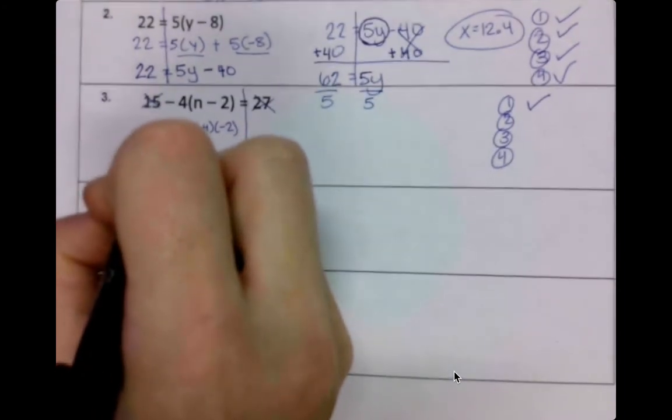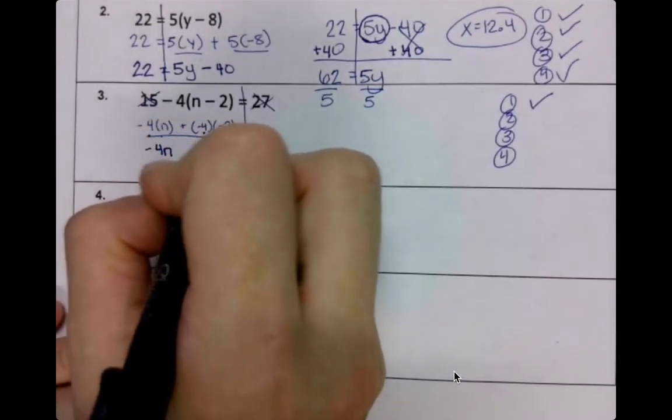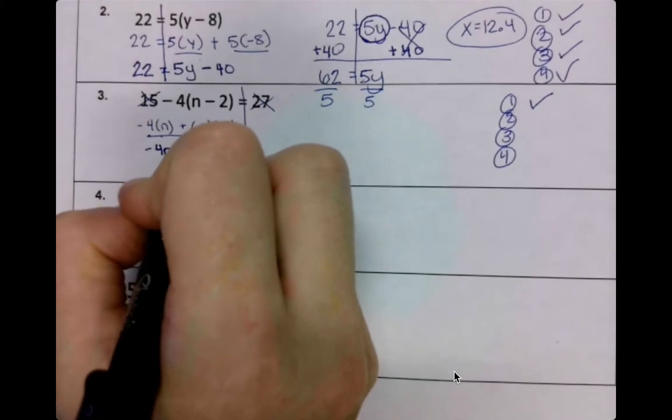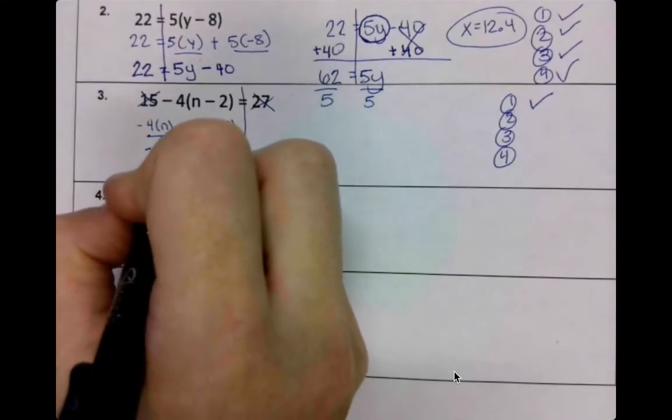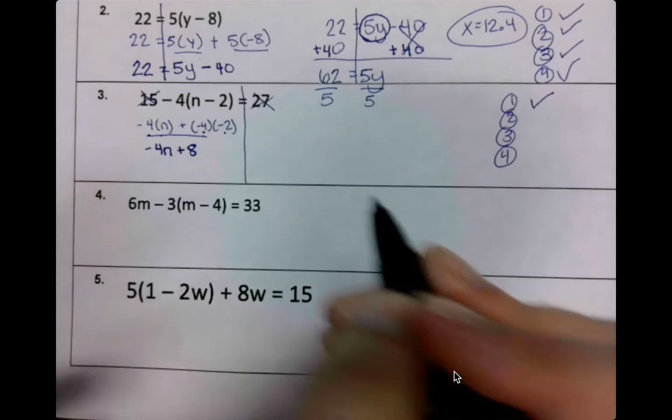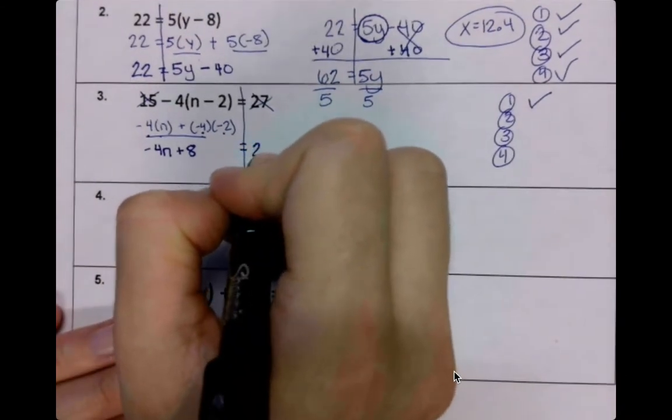Negative 4 times n, well that's -4n. Negative 4 times -2, well 4 times 2 is 8. Two negatives make a positive.